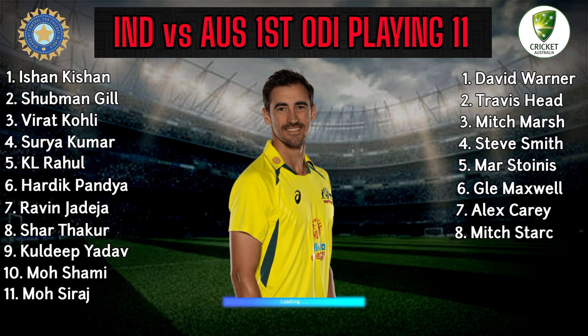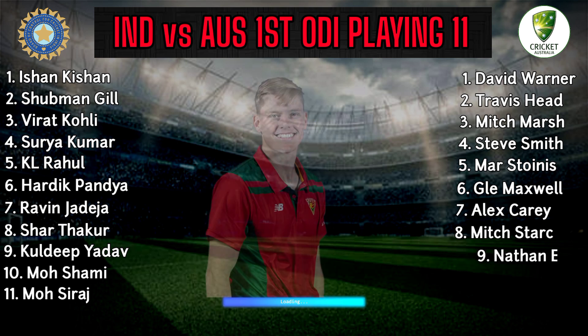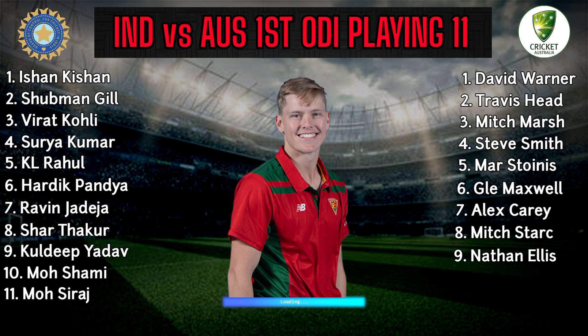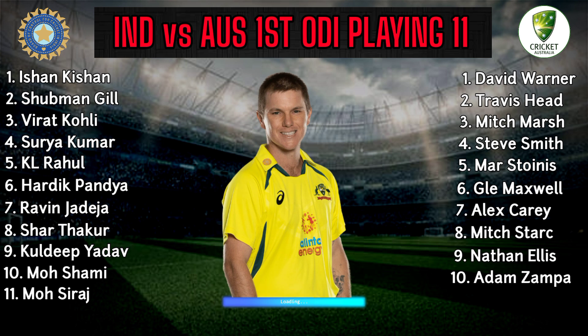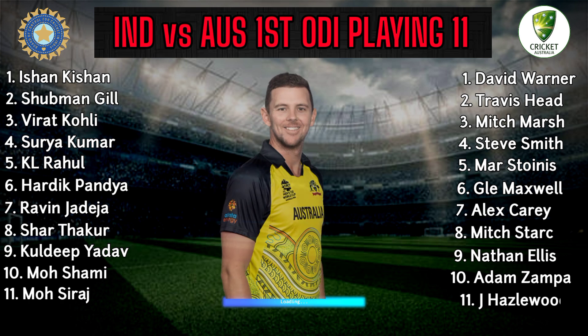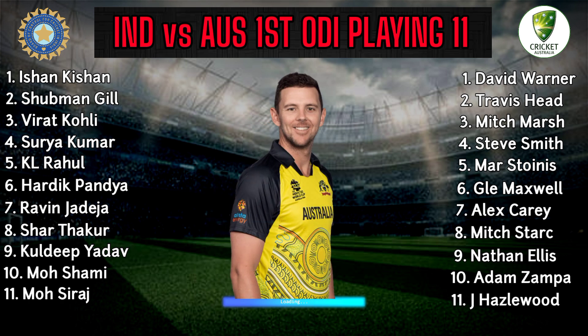Australia Team Bowlers. Number 8: Mitchell Starc, Fast Bowler. Number 9: Nathan Ellis, Fast Bowler. Number 10: Adam Zampa, Spin Bowler. Number 11: Josh Hazlewood, Fast Bowler.